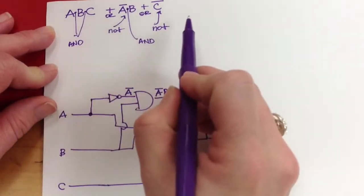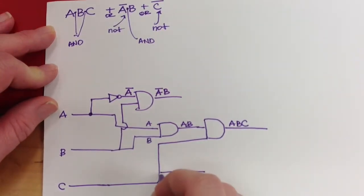And I haven't made NOT C yet. Let's go ahead and make it. That line is C. So I can just take a NOT gate off, and this becomes NOT C.